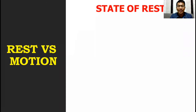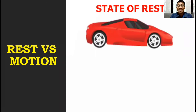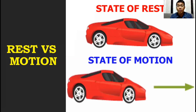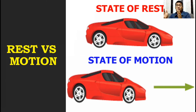Another example: a car is at a state of rest if it is not moving, parked, or stopped. But it will be in a state of motion if it already moves. So again, at rest means not moving, and state of motion means it is moving.